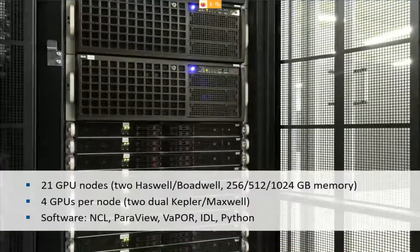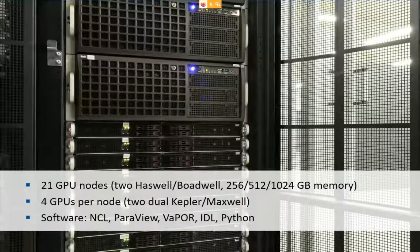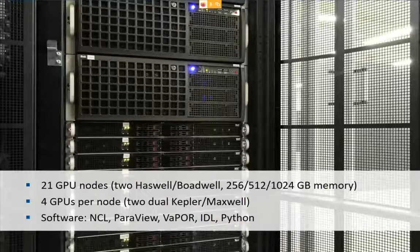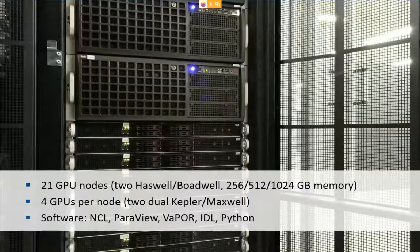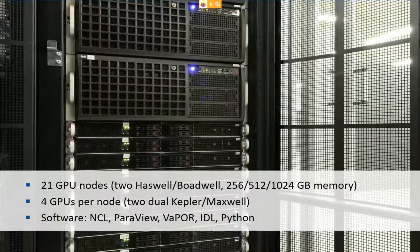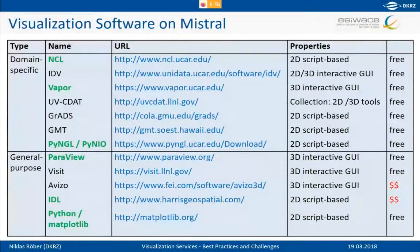At DKRZ we have 21 GPU nodes — a somewhat older system with Kepler and Maxwell GPUs — that still performs well enough for our visualization needs. The system includes nodes with up to a terabyte of main memory, useful for very large datasets. The main software used is NCL, ParaView, VAPOR, IDL, and Python. An overview of visualization software available on Mistral is provided, with tutorials for the tools highlighted in green.